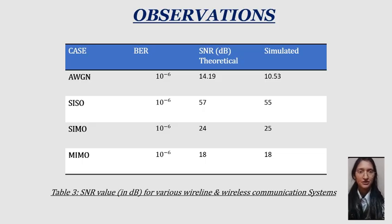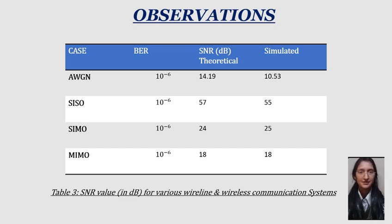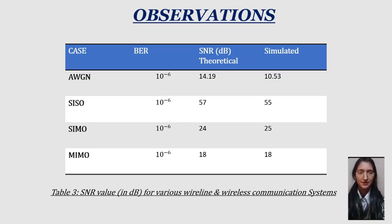From Table 3, we can observe that at a bit error rate of 10^(-6), the required SNR in dB is decreasing, which means that less signal power is required for transmission in the case of MIMO when compared with SIMO and SISO.